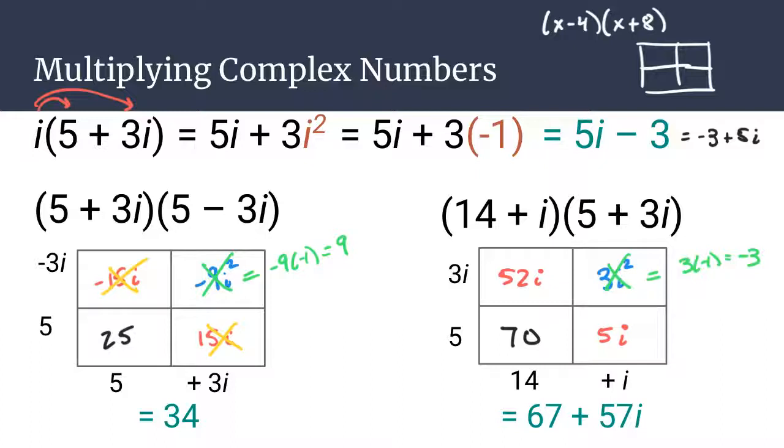52i plus 5i is 57i. And so what you'll notice is that neither of these answers have an i squared in it. And that's important, because you want to simplify that i squared to be negative 1. And so you'll do that every single time you do your multiplication in this scenario. This example on the right does have an i, and that's okay.